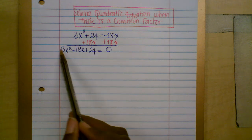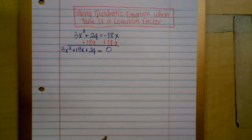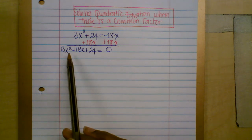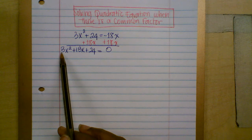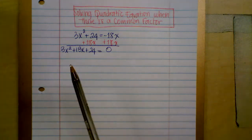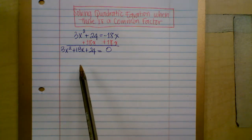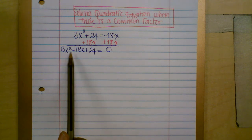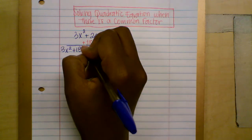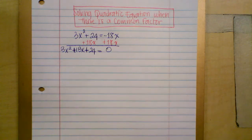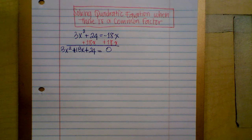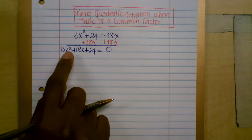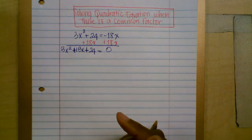Now for step two, you want to factor the left side. Before we factor, do you see a common factor? What number are 3, 18, and 24 all divisible by? I hope you can see it is 3 — 18 and 24 are divisible by 3. You can make x² alone by factoring out 3.